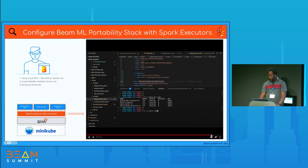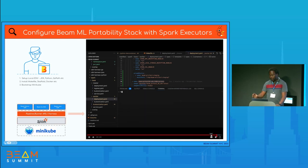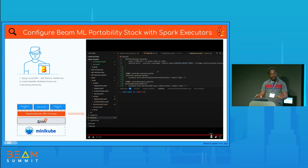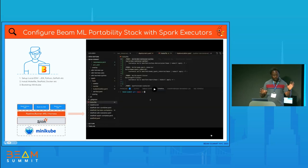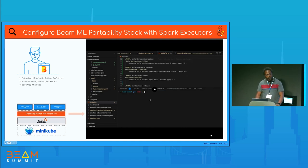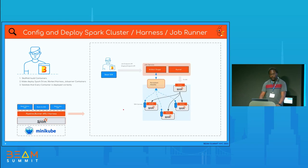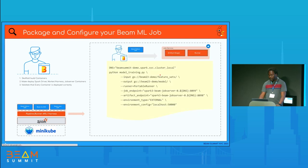Everything should be bootstrapped at the end of the process. I check the logs to make sure the job server is running, the Spark master is running, and everything is running as expected. Now I have my environment — the bootstrap, the job service, and the Spark cluster. You can also swap out Spark and use Flink; we've tried that use case as well. This is how it looks: the shared persistent storage, Spark driver, workers, and artifact stager, all connected together.